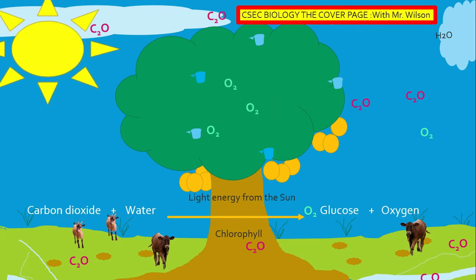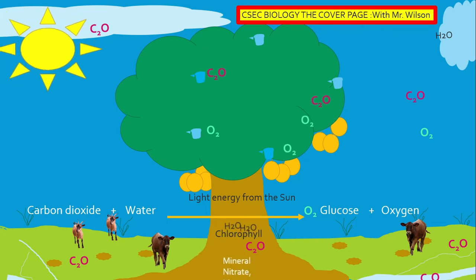If you observe, oxygen is also given off and this oxygen is used for the process of respiration and combustion. And of course you'll find some oxygen in the atmosphere.